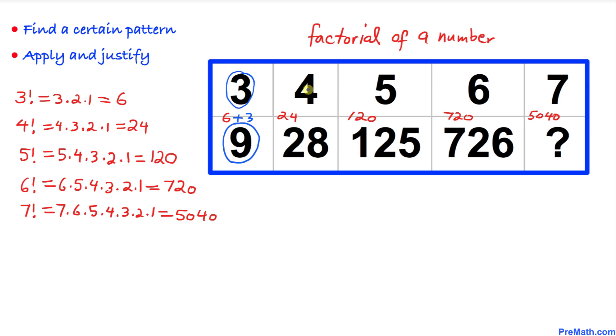Likewise we are going to add this original number 4 to 24. That is going to give us 28. Likewise we are going to add 5 over here, so we are going to get 125. And for this number 6 we are going to add 6 to this 720, and we are going to get 726.